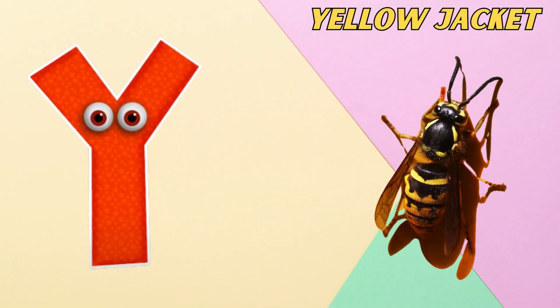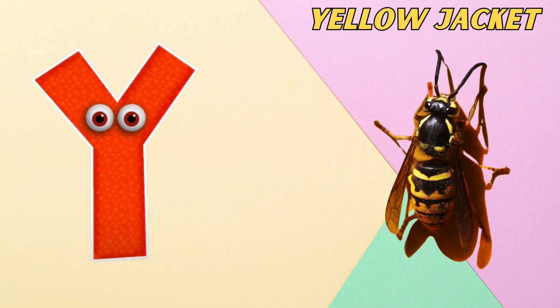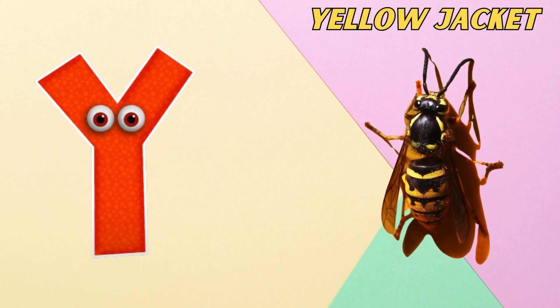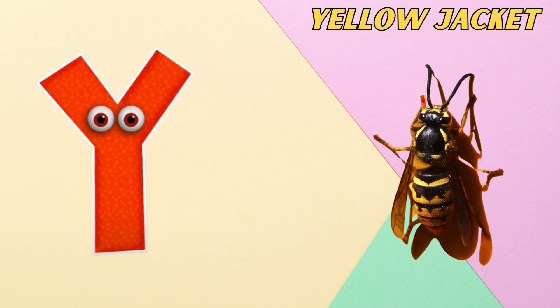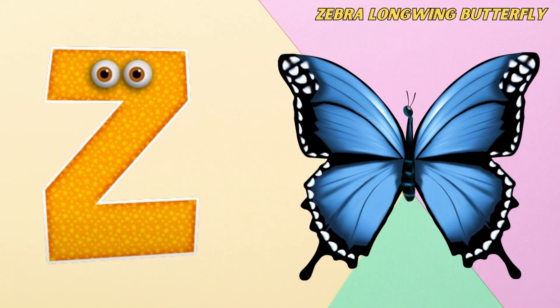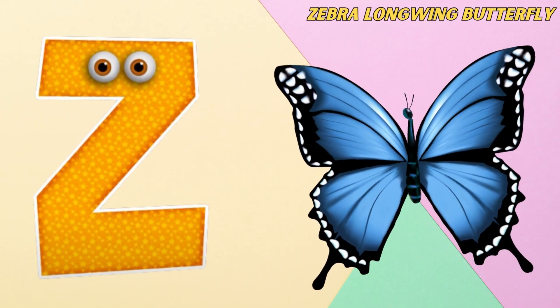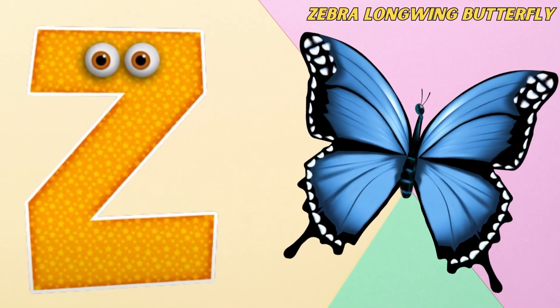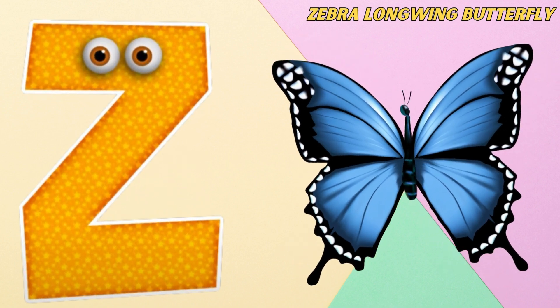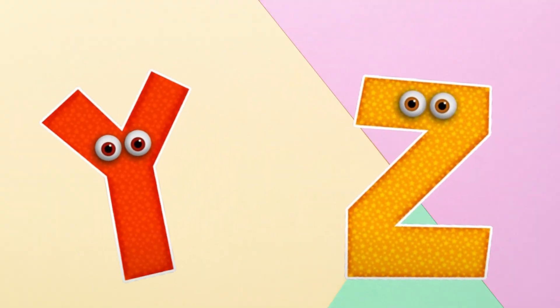Y is for yellow jacket. y, y, yellow jacket. Z is for zebra longwing butterfly. z, z, zebra longwing butterfly.